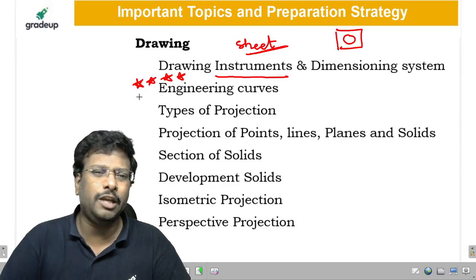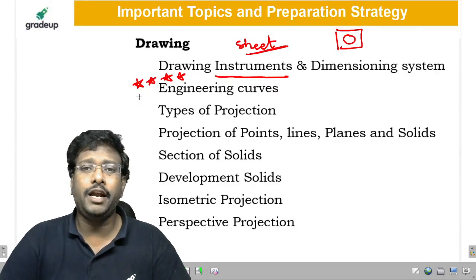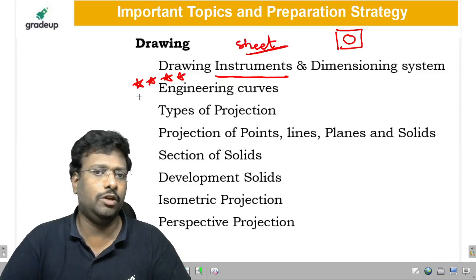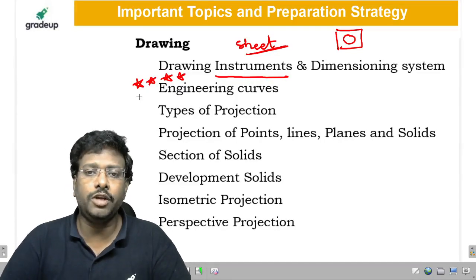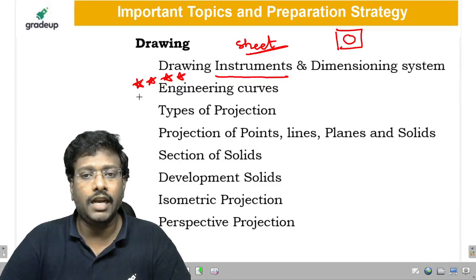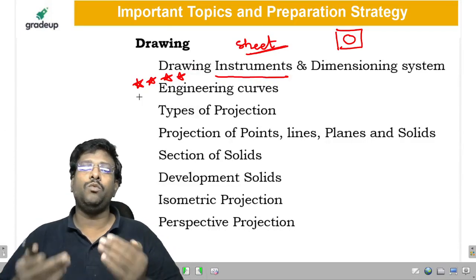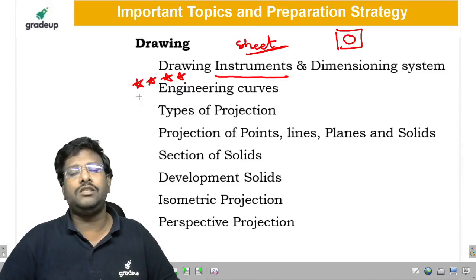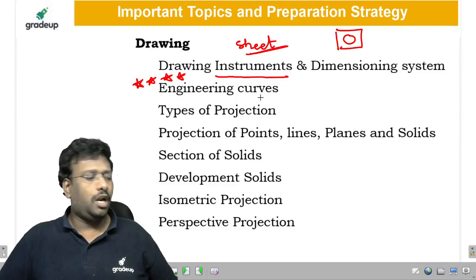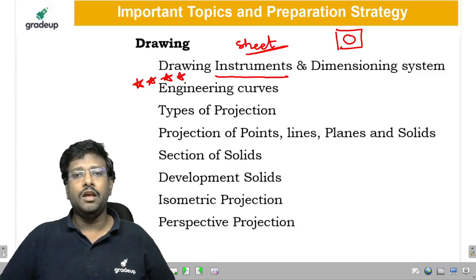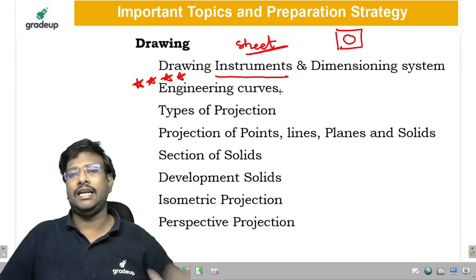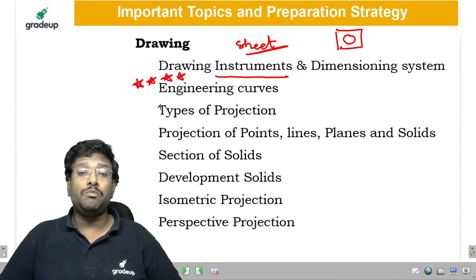Engineering curves are very important — many questions have already been asked from this area, and many more can be expected. In undergraduate studies, you are familiar mainly with conics, cycloids, and involutes. But beyond those, questions can come from roulettes — the broader category of cycloidal curves — trochoids, what shape trochoids produce, as well as spirals and helix, which are not covered in most universities but are being asked in examinations.